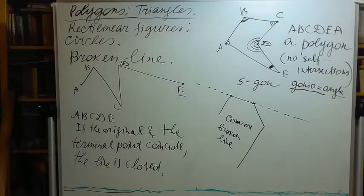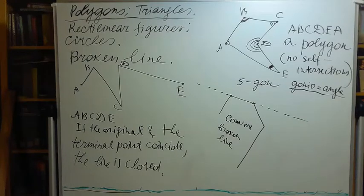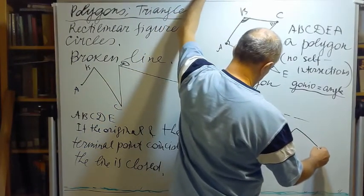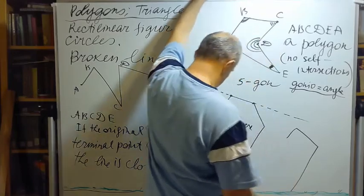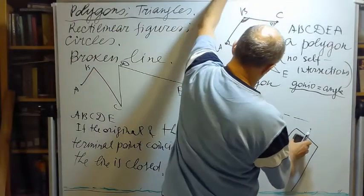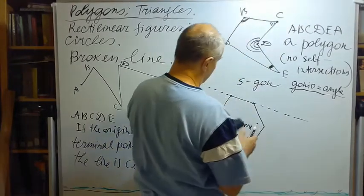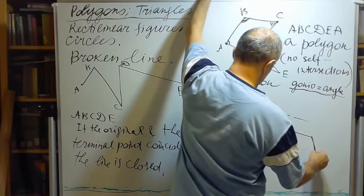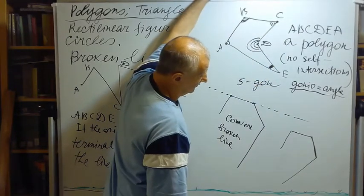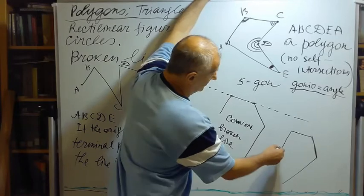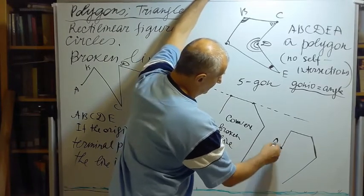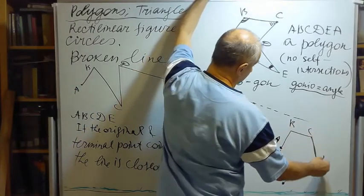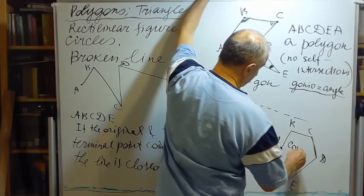See, the whole line is in one position. Also, I will try to draw a similar line like this, like this, like this, and like this. This is a convex line. If I join the original point and terminal point, I will receive a convex polygon.